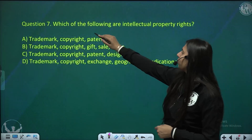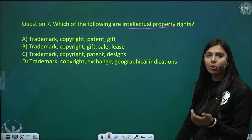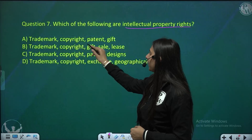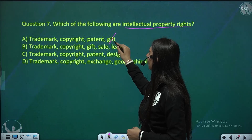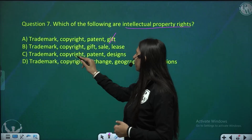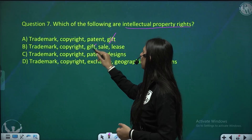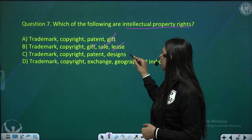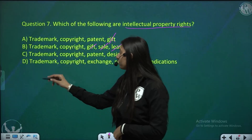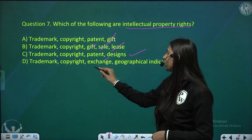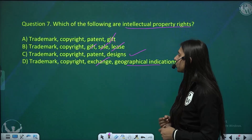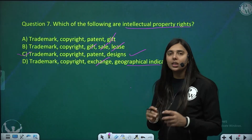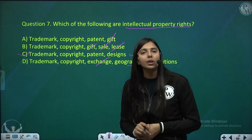Question 7: which of the following are intellectual property rights? Option A — trademark, copyright, patent and gift — gift is not an IPR, so this is incorrect. Option B — trademark, copyright, gift, sale, lease — none of sale, gift or lease are IPRs. Option C — trademark, copyright, patent and designs — these are all IPRs, so this is correct. Option D — trademark, copyright, exchange — exchange is not an IPR. The correct answer is option C.